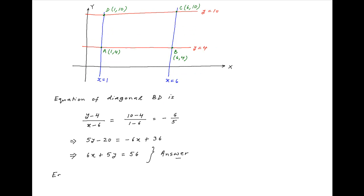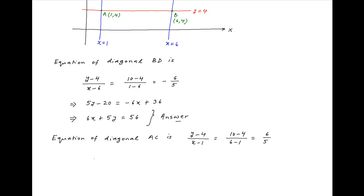Similarly, the equation of diagonal AC is (y − 4) / (x − 1) = (10 − 4) / (6 − 1). The right-hand side simplifies to 6/5. Cross multiplying, we get 5y − 20 = 6x − 6, which can be rearranged as 6x − 5y = −14. This is the required answer.